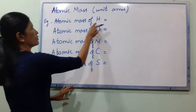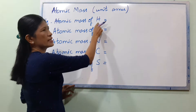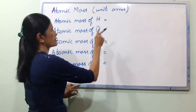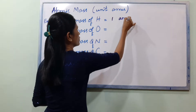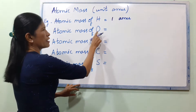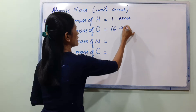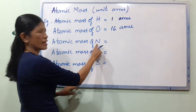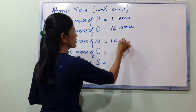For example, the atomic mass of hydrogen. Hydrogen is H. The atomic mass of H is 1 AMU. The atomic mass of O is oxygen. The atomic mass of O is 16 AMU. The atomic mass of N is nitrogen. The atomic mass of N is 14 AMU.